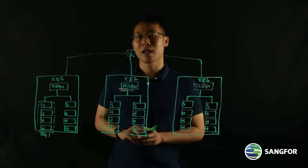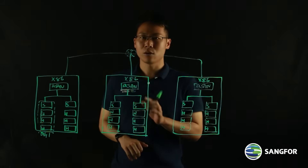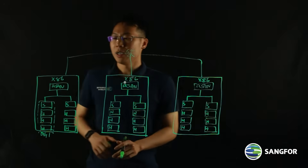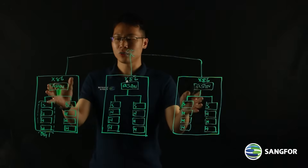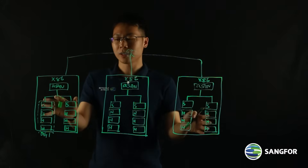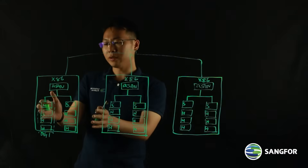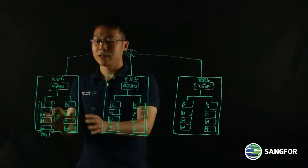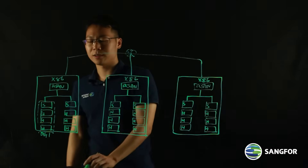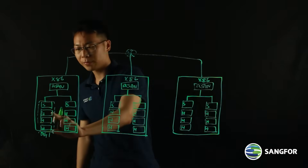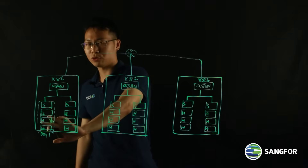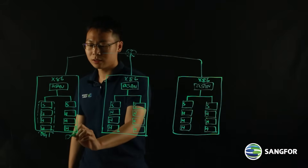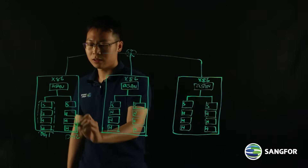So let's take a look at how data striping works on ASAN. Here I've drawn a 3-node cluster. On each node, there are 2 SSDs and 6 HDDs — they form two disk groups, each with 1 SSD and 3 HDDs. This is disk group 1 and this is disk group 2.